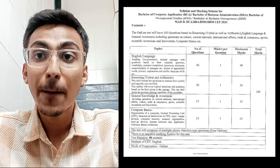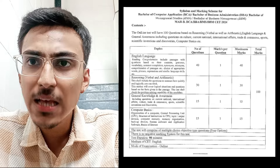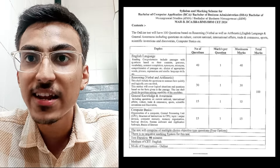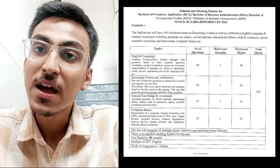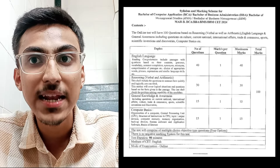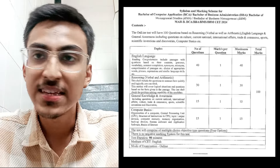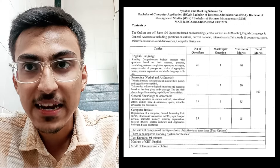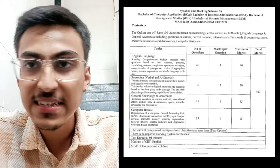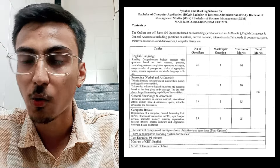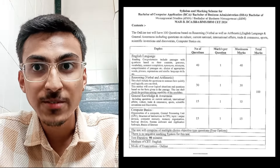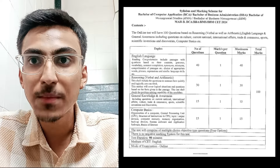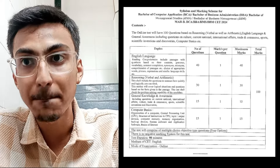In 90 minutes you can attempt sections and interchange between them. You can first attempt GK, then English, then reasoning — switching to next subjects as needed. So that's your tip number one: understand the syllabus and exam pattern.